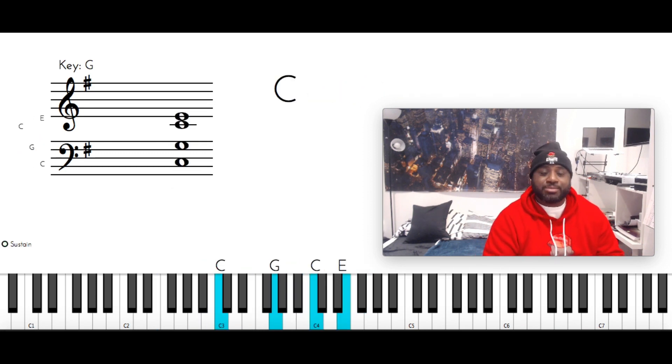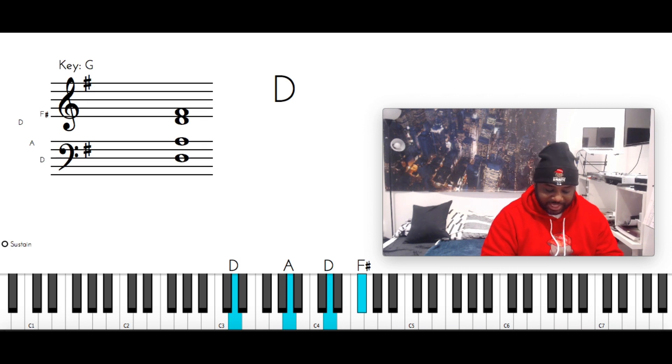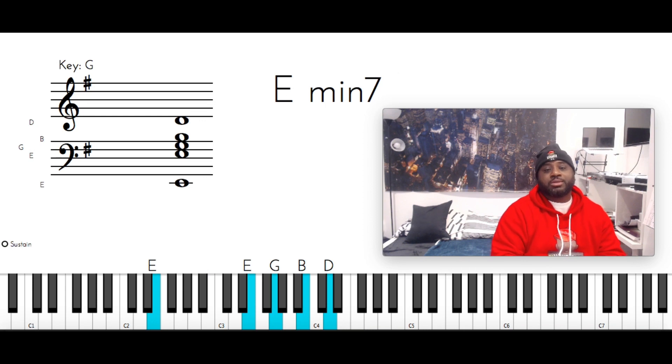So that is C major, C, G, C, and E. D major, D, A, D, F sharp. B minor 7, B, A, B, D, F sharp. E minor 7, E, E, G, B, and D.